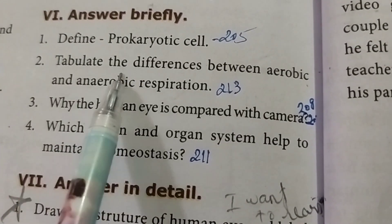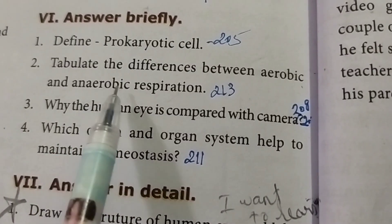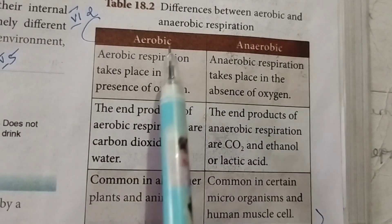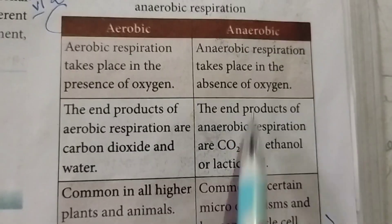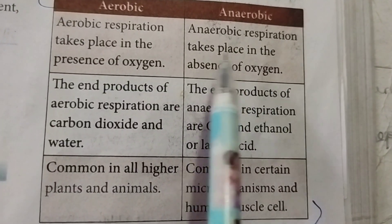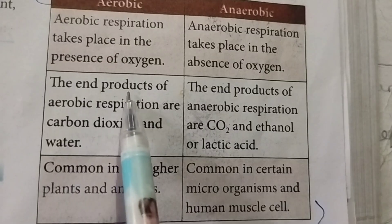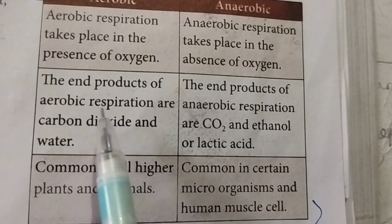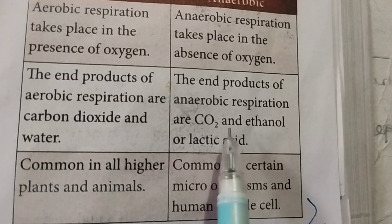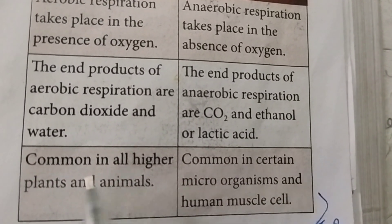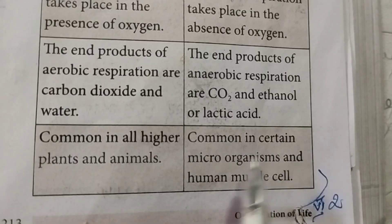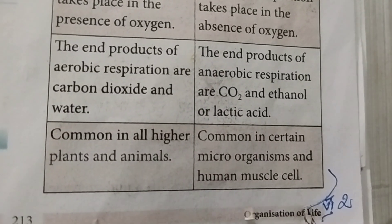Second: tabulate the differences between aerobic and anaerobic respiration. Aerobic respiration takes place in the presence of oxygen; anaerobic respiration takes place in the absence of oxygen. End products of aerobic respiration: carbon dioxide and water. End products of anaerobic respiration: CO₂ and ethanol or lactic acid. Aerobic respiration occurs in higher plants and animals; anaerobic respiration occurs in yeast and human muscles.